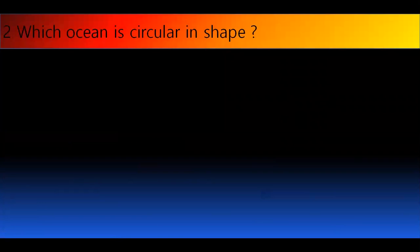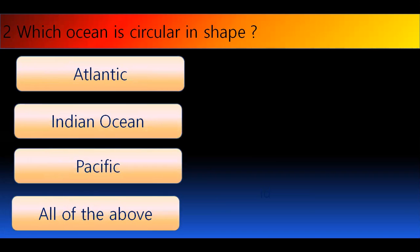Question number 2. Which ocean is circular in shape? Which ocean is circular in shape? And the right answer is Pacific Ocean, which is also the largest ocean in the world.